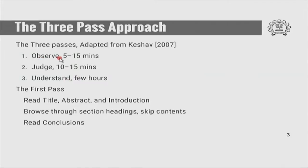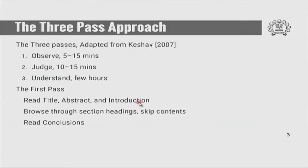There is a first pass — mainly an observation pass, about 10 to 15 minutes. In the second pass, when you think the paper might be relevant to your work, you spend a little more time in what is called a judgment phase. You judge whether it is good or bad. The topic might be relevant looking at the title and abstract, but it may not be good or serious work. The third pass is for something you definitely require for your work and you need to spend a lot more time on it — that is the understanding phase.